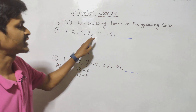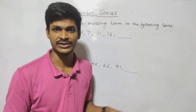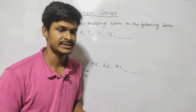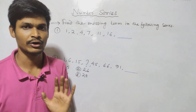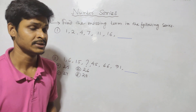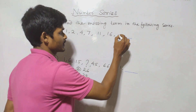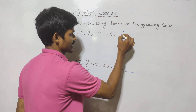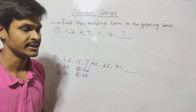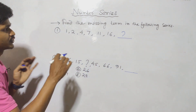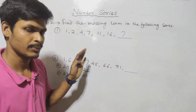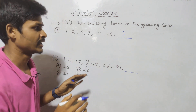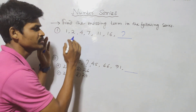The series is: 1, 2, 4, 7, 11, 16. What is next? It is very easy.